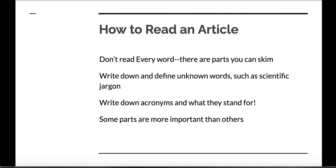Here are some quick tips for how to read an article. If you've ever tried to read every single word from start to finish, that may have been really difficult. But here's a fun surprise: you don't have to read every word. There are parts that you can skim. You also should write down and define unknown words such as scientific jargon. That's going to help you make better sense of what they're talking about. Also write down acronyms and what they stand for. Also know that some parts are going to be more important than others.